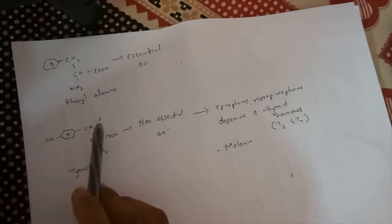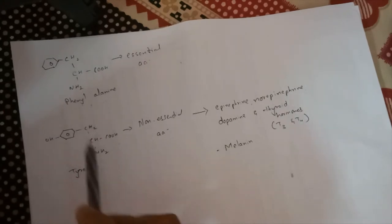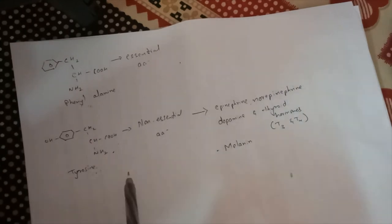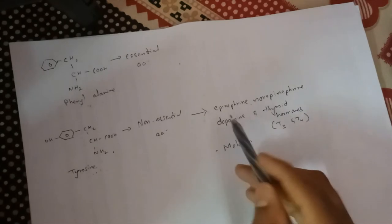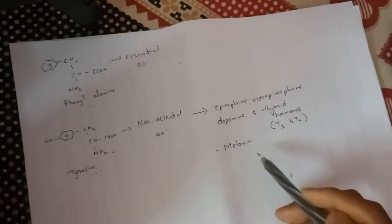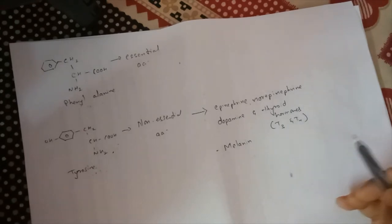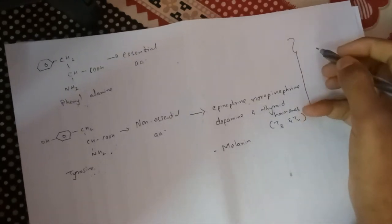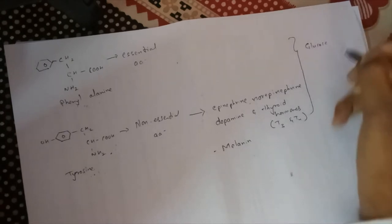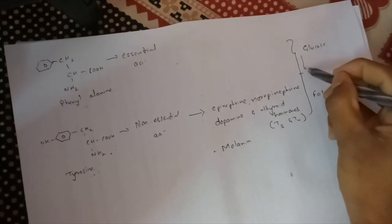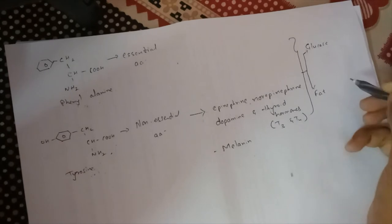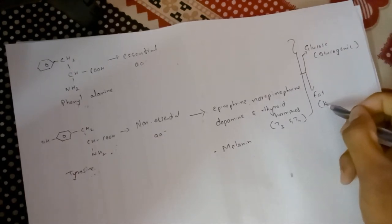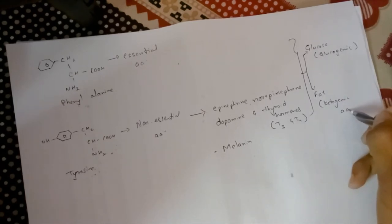To recap: phenylalanine and tyrosine are aromatic amino acids. Phenylalanine gets converted to tyrosine, and tyrosine shows the activities — synthesizing hormones such as epinephrine, norepinephrine, dopamine, thyroid hormones, and melanin. These amino acids are also responsible for forming glucose and fat, hence tyrosine is both a glucogenic and a ketogenic amino acid.